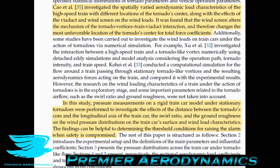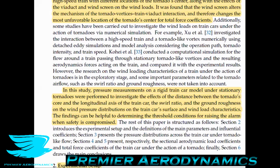In this study — covering podcast 77 and podcast 78 — pressure measurements on a rigid train car model under stationary tornadoes were performed to investigate the effects of the distance between the tornado's core and the longitudinal axis of the train car, the swirl ratio, and the ground roughness on wind pressure distributions on the train's surface and wind load characteristics. The findings can be helpful to determine the threshold conditions for raising safety alarms.